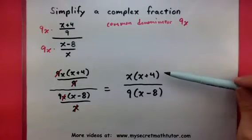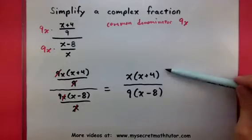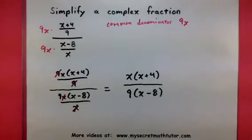Now, the reason why this is simplified is we don't have any more common factors in the top and bottom that we can cancel out. So, we are basically done.